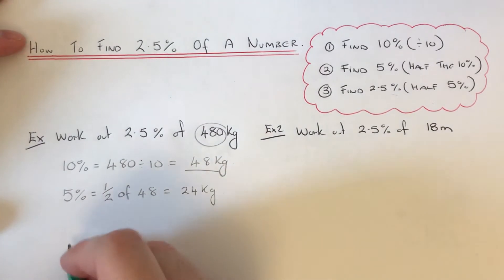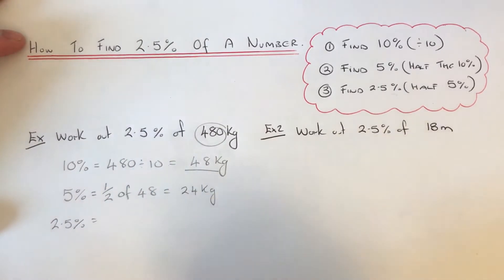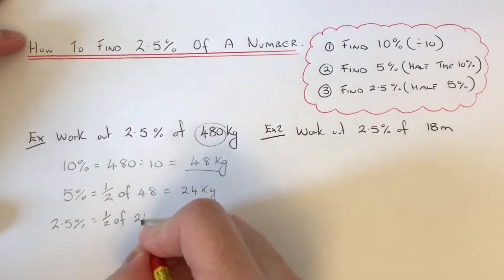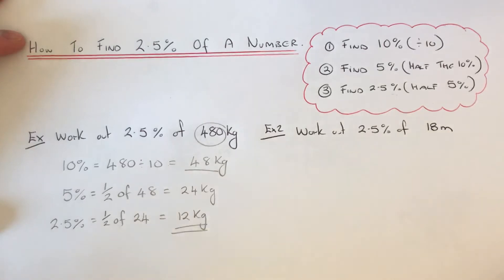And then finally to get 2.5%, we half the 5% amount. So we do a half of our last answer, 24, which is equal to 12 kilograms. And that's our final answer.